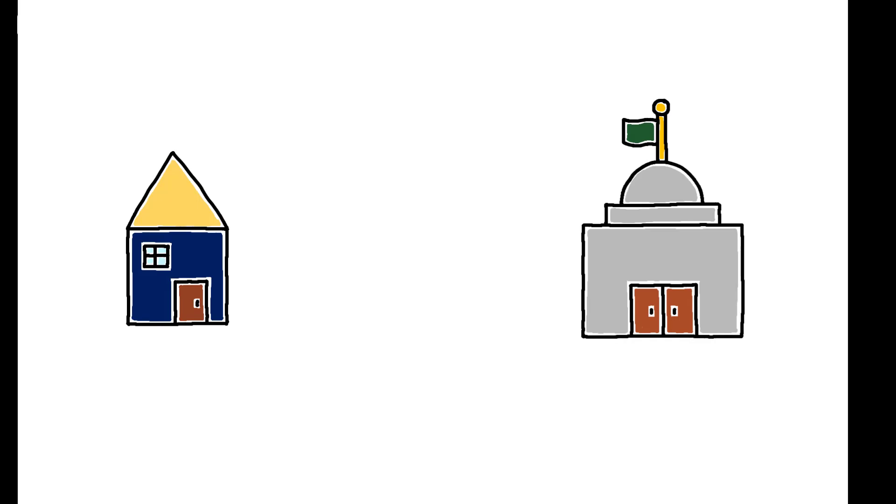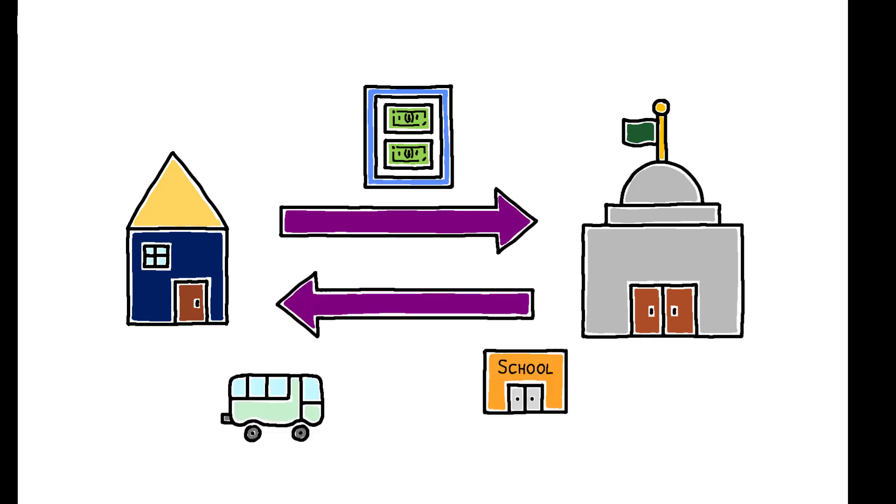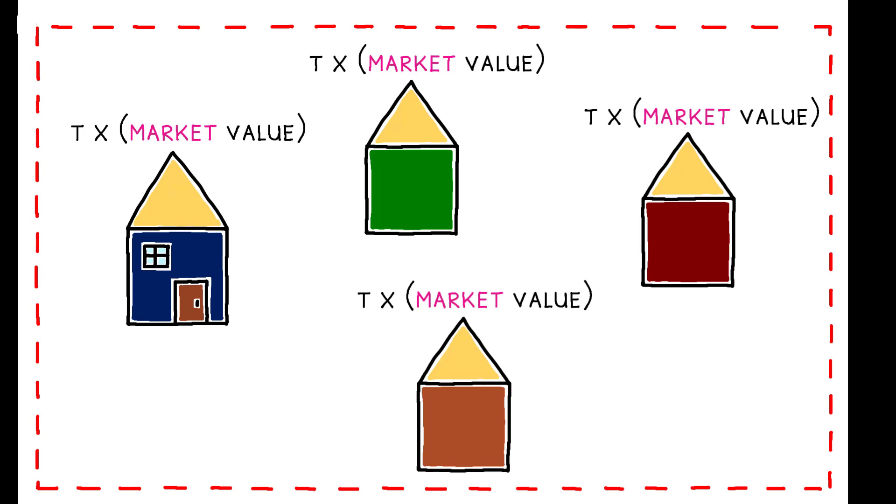In the vast majority of US localities, homeowners pay an annual residential property tax that funds the provision of public goods and services. The core structure of this system is a proportional tax on home value. Residents in the same jurisdiction pay the same fixed percentage of their home's market value.